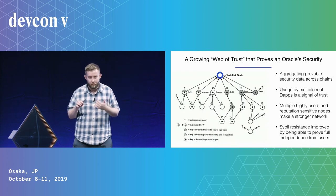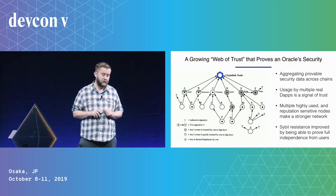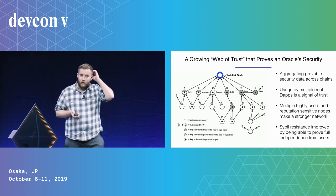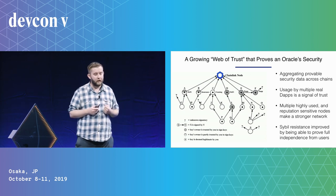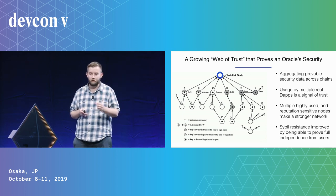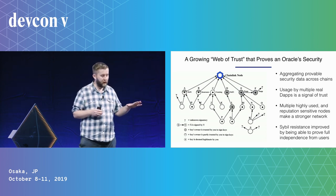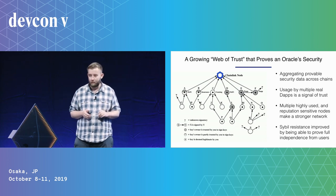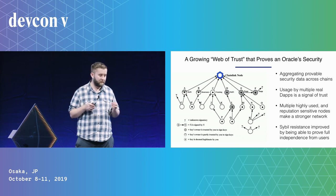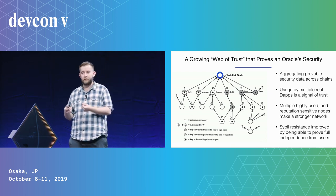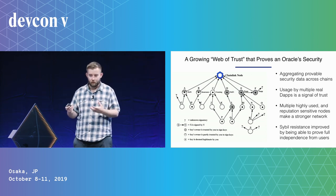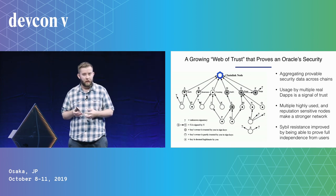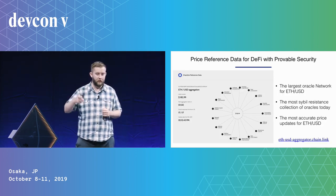This leads us to a world where Chainlink node operators service various different chains and accrue usage, and that usage across different environments is another source of proof — proof that, for example, five DeFi applications, two insurance applications, and five gaming applications are using this node operator, and it's able to successfully deliver data, randomness, and various types of outputs to these users. As a system like ours gets used, you accrue a lot more data about each individual node operator, and that accrual of data provides even greater assurances. There's a network effect from usage that allows people to continually define greater degrees of security and guarantees.